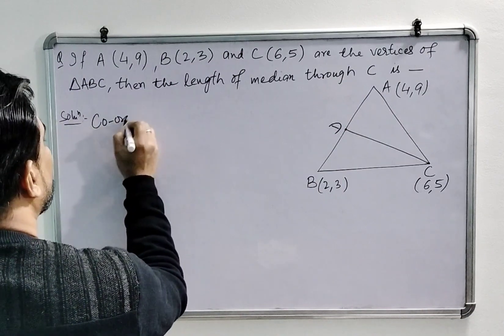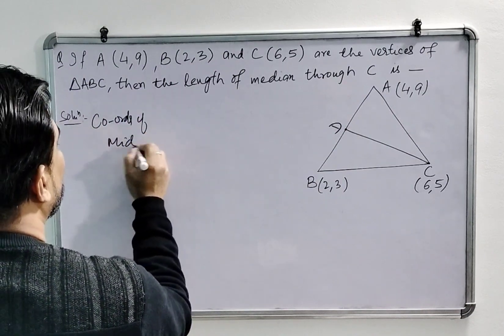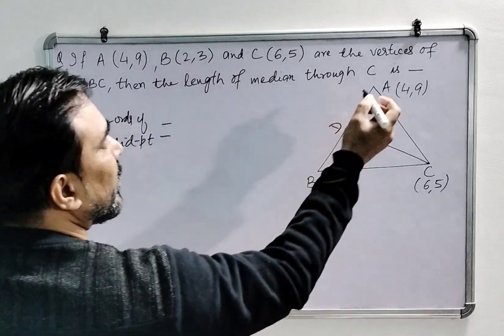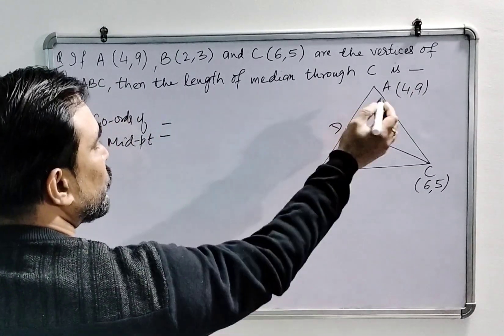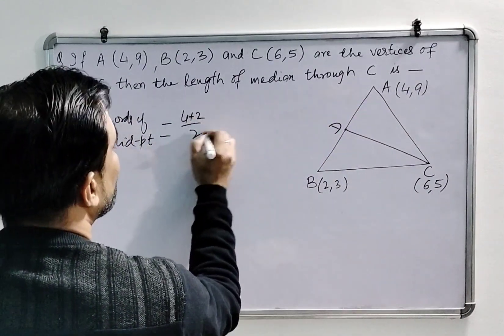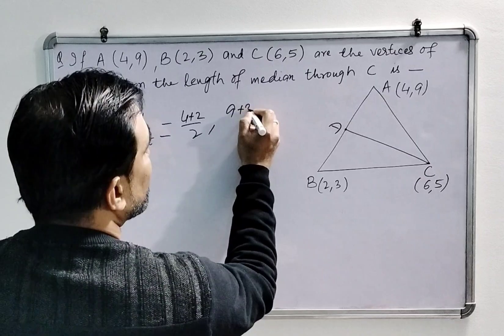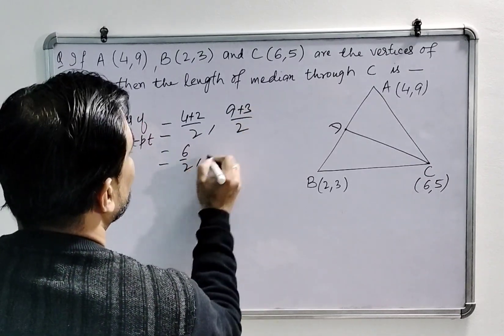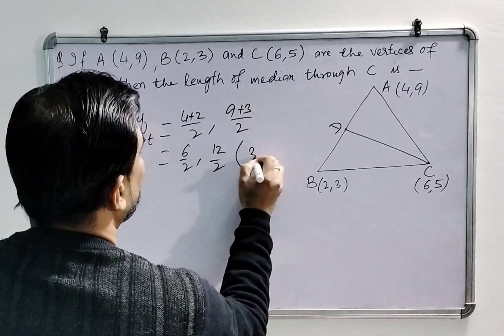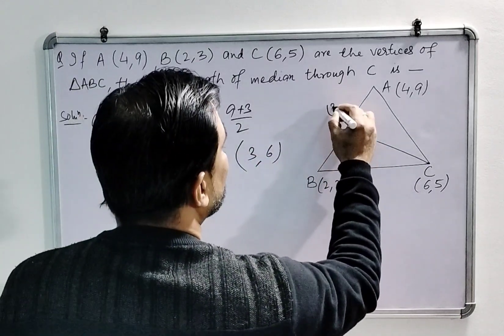So the coordinates of midpoint is x1 plus x2 divided by 2, means 4 plus 2 by 2, and y1 plus y2, 9 plus 3 by 2. So the coordinates will be 3 and 6. So we can write here 3 and 6.